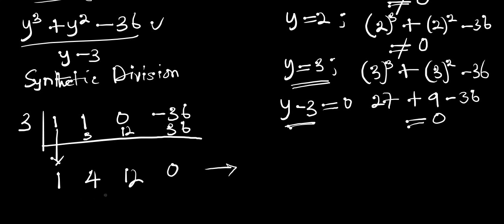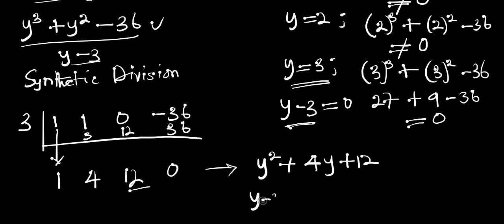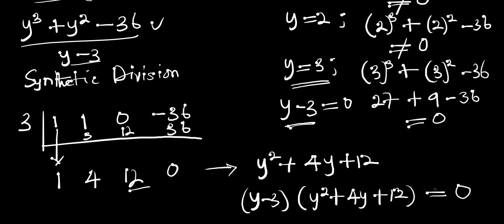The result translates as follows: since we started with y to the power 3, we reduce by one degree. The first coefficient 1 gives y to the power 2, the next value 4 gives 4y, and 12 is the constant. So the two factors are y minus 3 times y squared plus 4y plus 12, and this equals 0. Multiplying these two factors gives back y to the power 3 plus y to the power 2 minus 36.